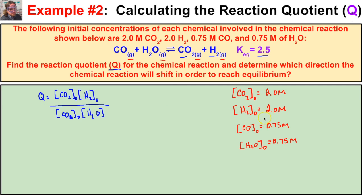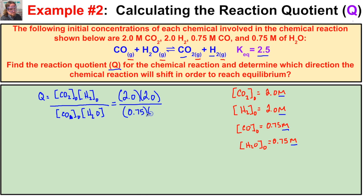Plugging in the values: Q = (2.0 × 2.0) / (0.75 × 0.75). Calculating this gives a Q value of approximately 7.1.